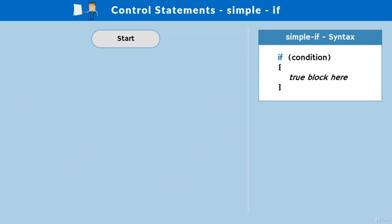In this lecture, we understand the first form of if — simple if — which comes under conditional control statements. We write 'if', and in the parentheses we write the condition. If the condition is true, the block of code inside the curly braces will be executed; otherwise, it will be skipped. A code block begins with an opening brace and ends with a closing brace.